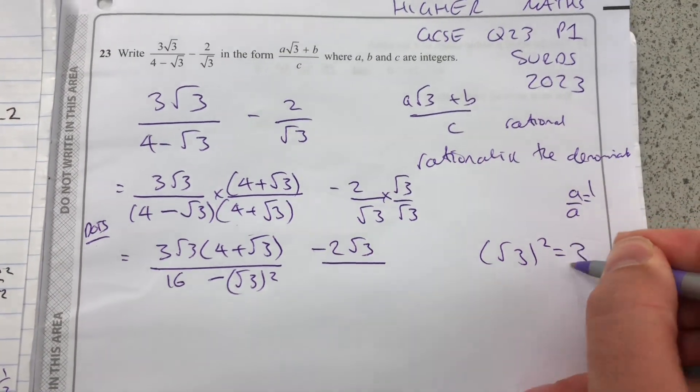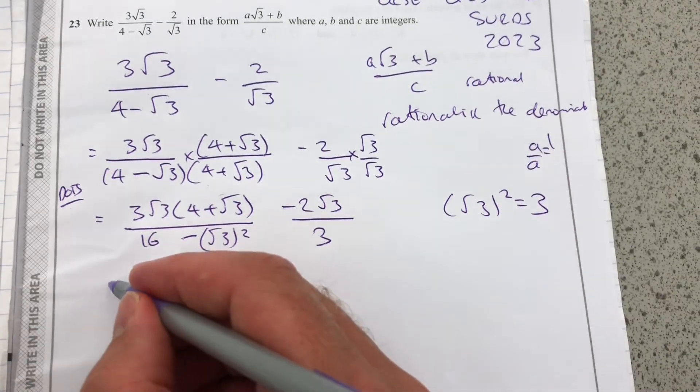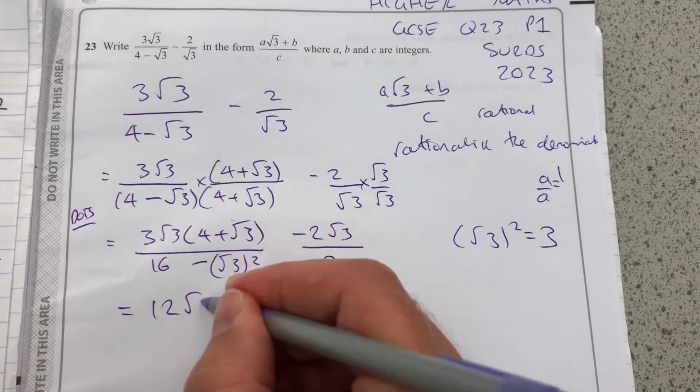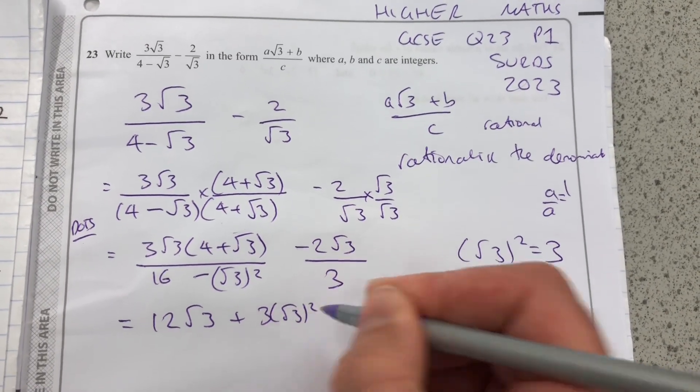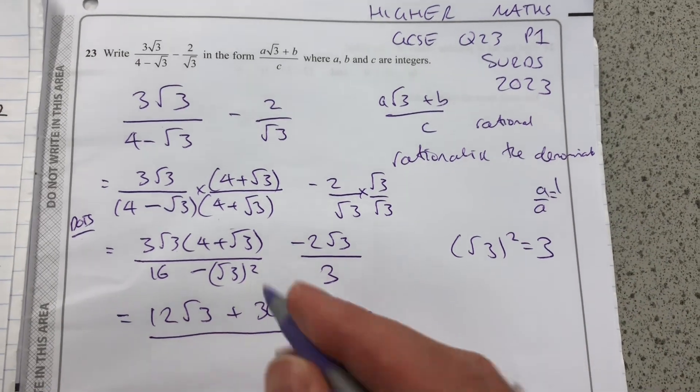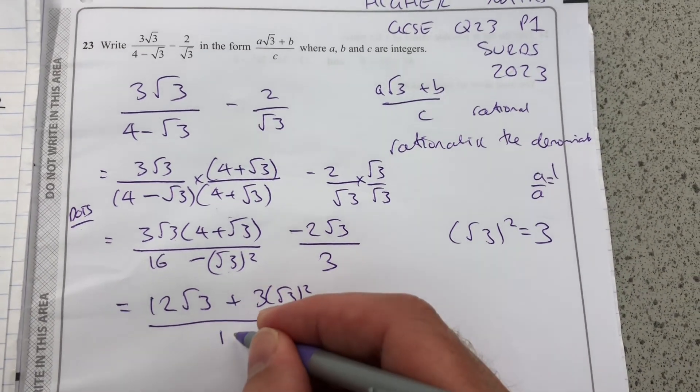OK, so now I'm going to have 12 root 3 plus 3 times root 3 squared. Root 3 squared is 3. 16 minus 3 is 13.